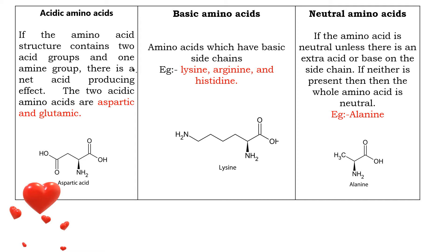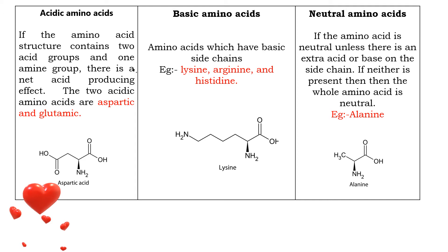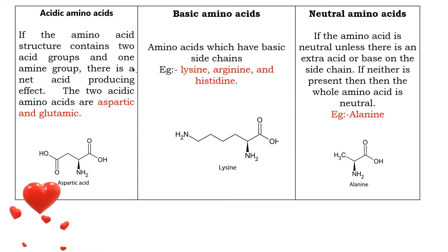Because there is one amino group which is basic and one acid group which is acidic, the amino acid becomes neutral. If an amino acid contains two COOH groups and one NH2 group, the acidic group is more, so it is an acidic amino acid. If the molecule contains two amino groups and one COOH group, it is called a basic amino acid.